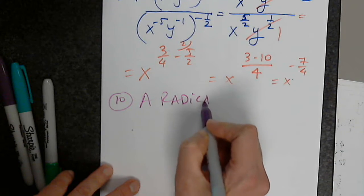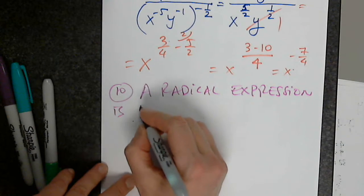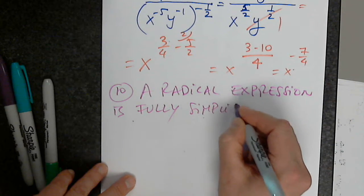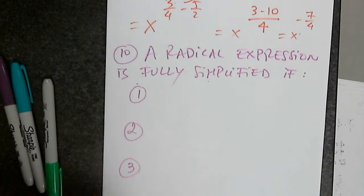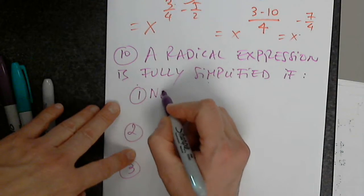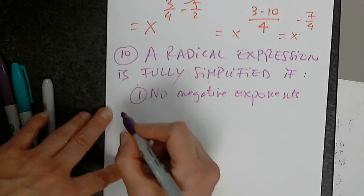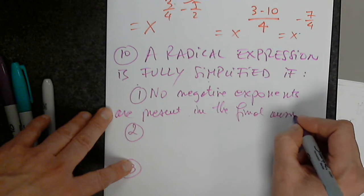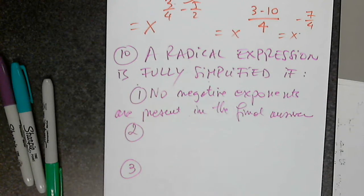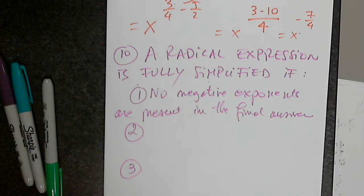A radical expression is fully simplified if three conditions are fulfilled. Condition number one: no negative exponents are present in the final answer.